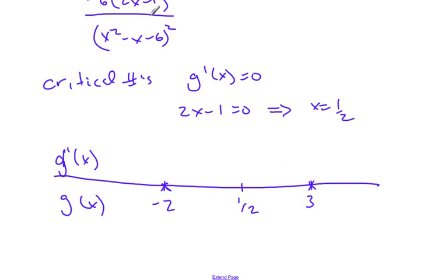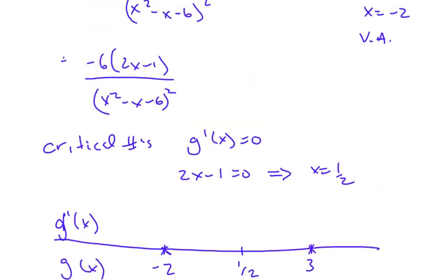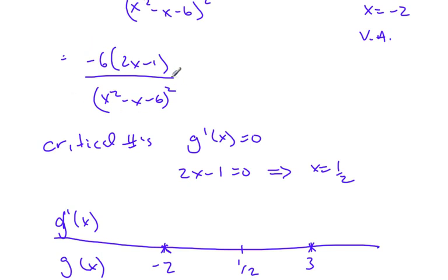Now, looking at my derivative, I choose a number to the left of -2, like -10. The bottom is always positive because it's squared. At -10, the top is negative times negative, so positive. Overall, this is positive, which means the function is increasing.